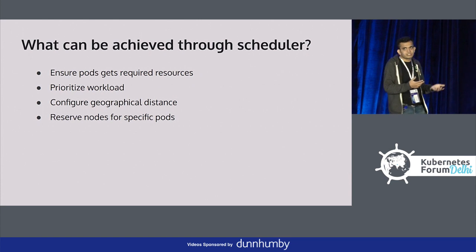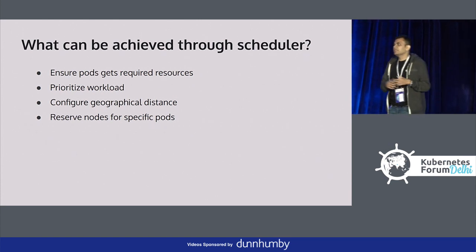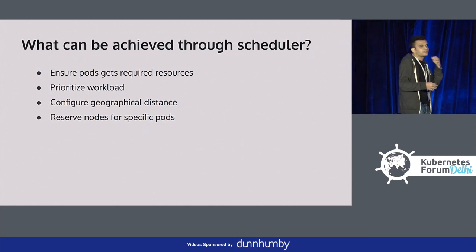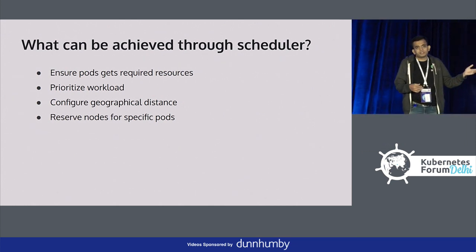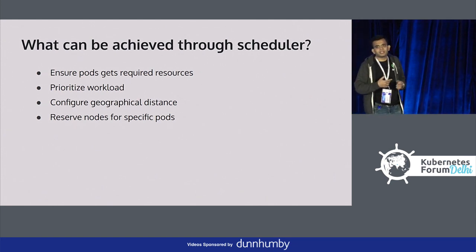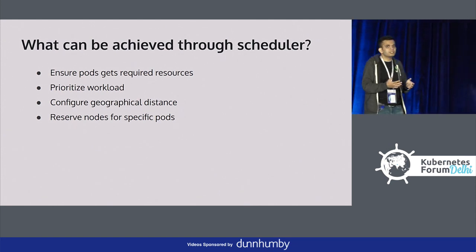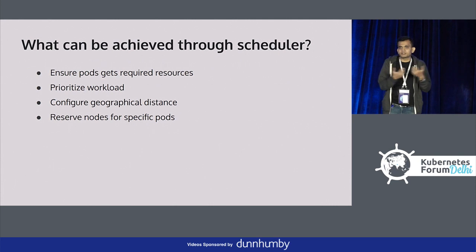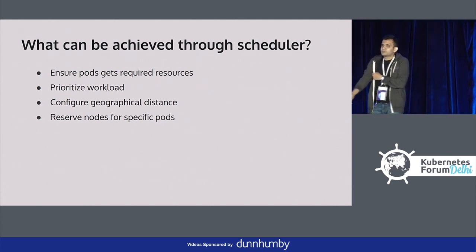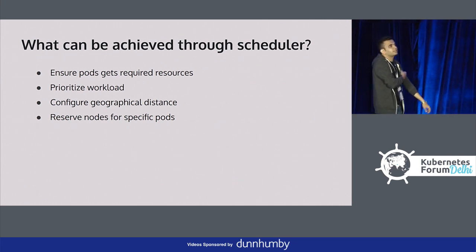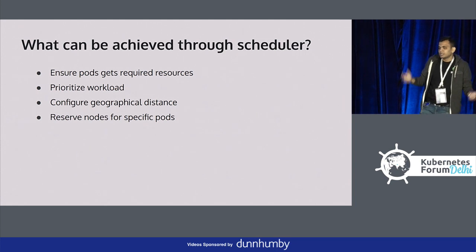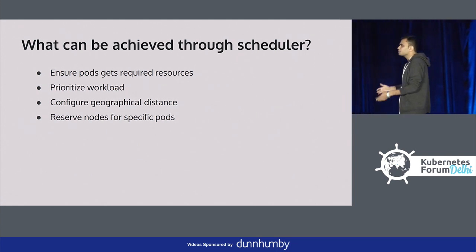You can configure geographical distance. If services A and B talk very often, and service A is deployed in the US zone while service B is in EU, the round-trip latency would be very high. You might want both deployed in a geographically nearer zone. You can also reserve nodes for specific pods — for example, only machine learning workloads running on GPU-enabled nodes. You can do all these things through the scheduler and much more.